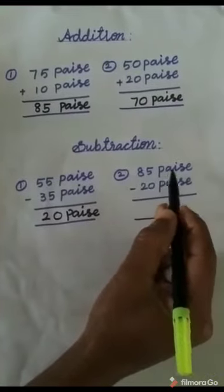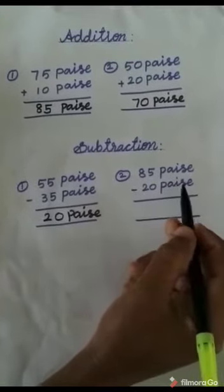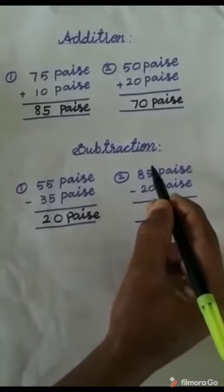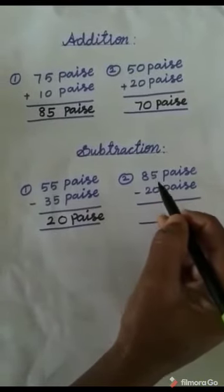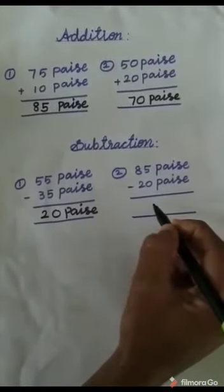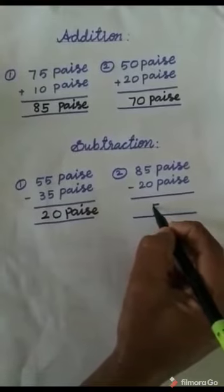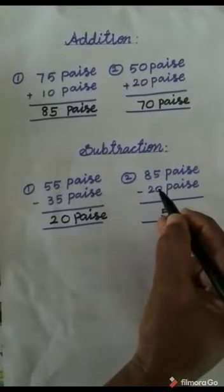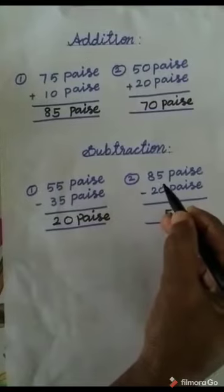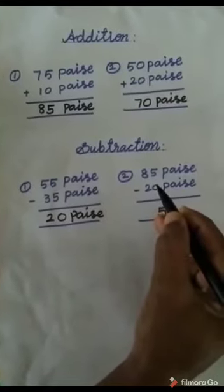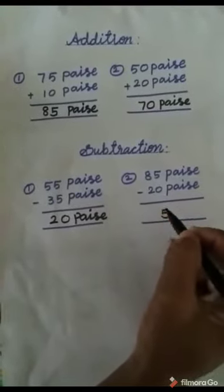See the next one: 85 paisa minus 20 paisa. First we subtract the one's place, 5 minus 0. Here write 5. When we subtract 0 from any number, the answer will be the same number. So 5 minus 0 equals 5.